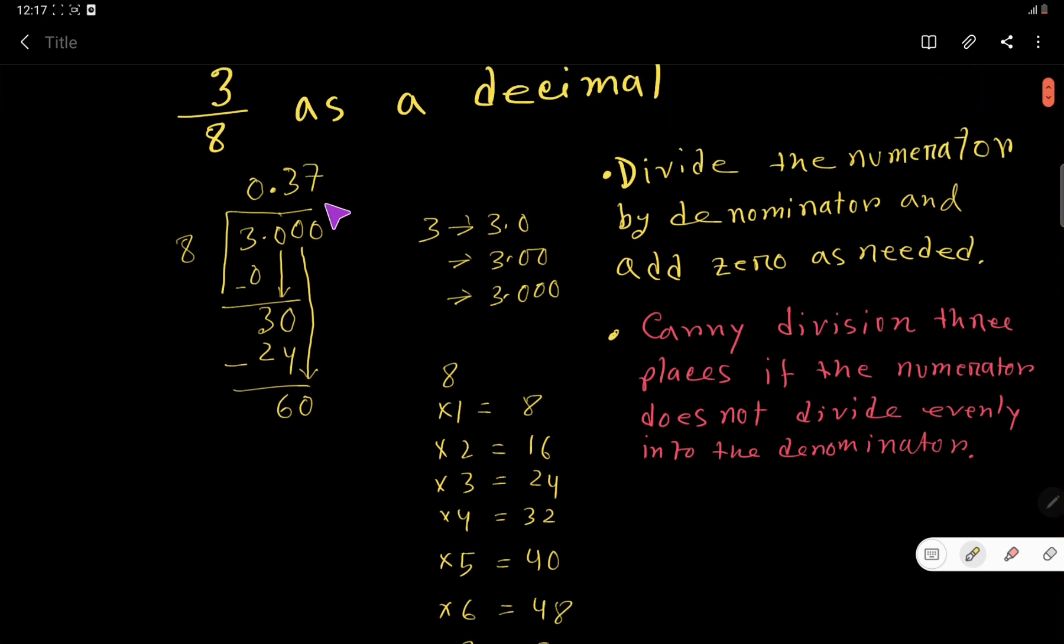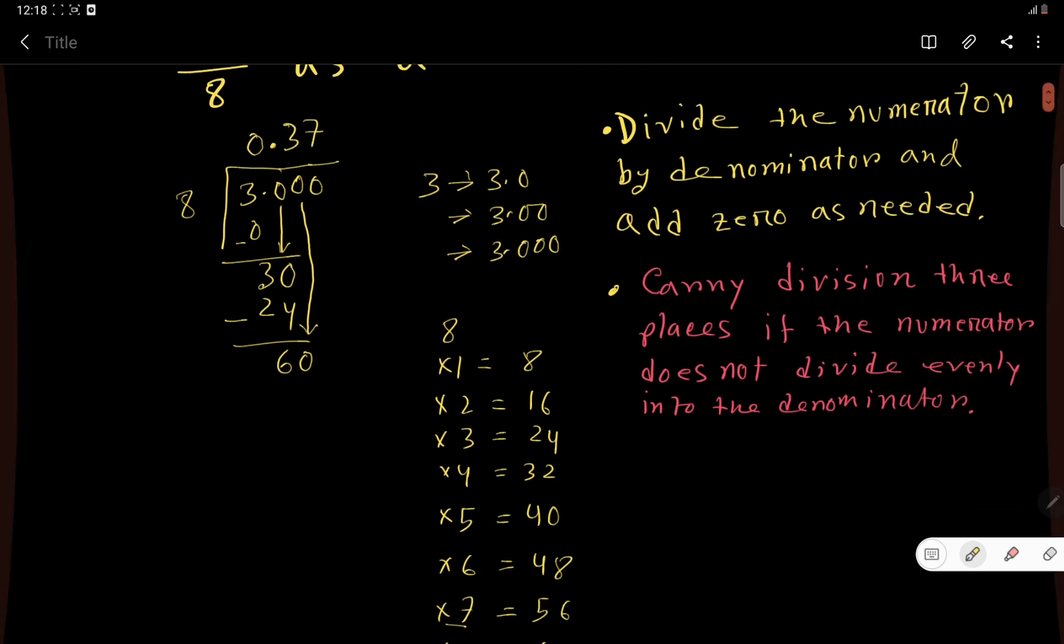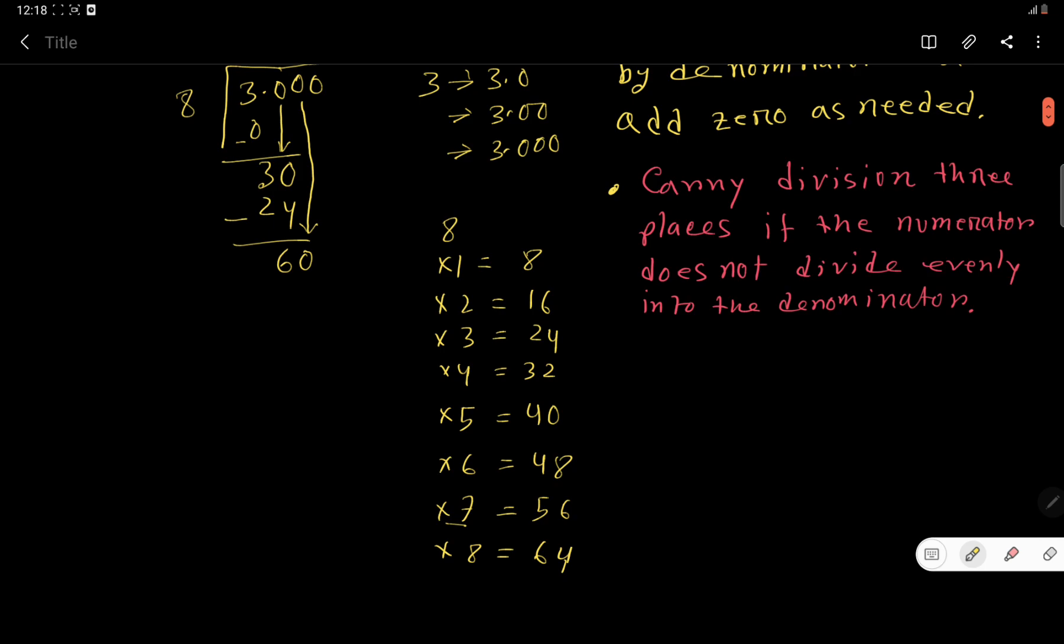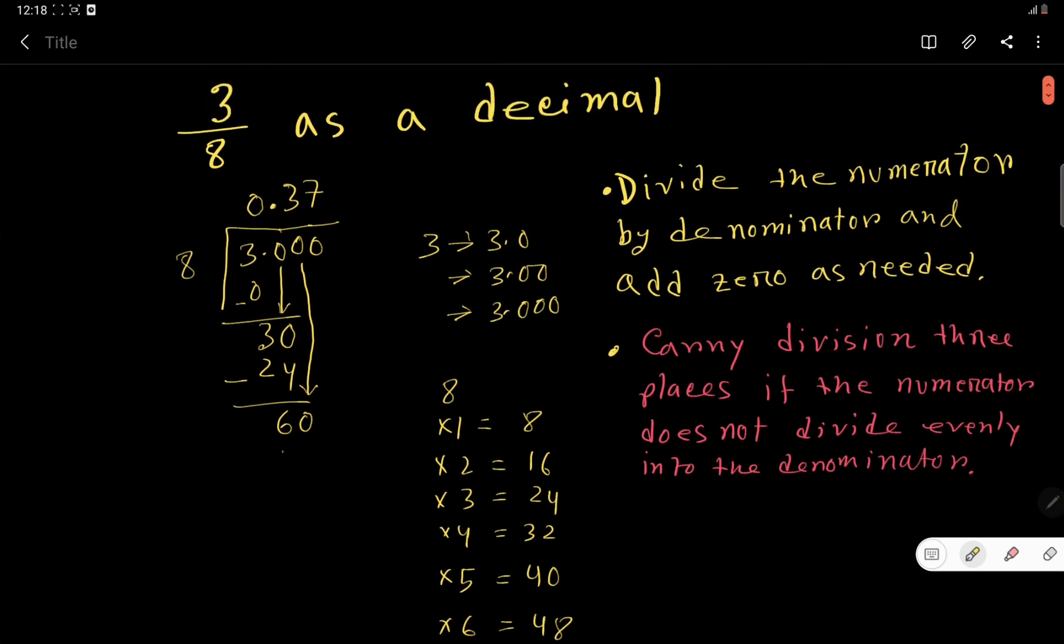We take 7. 8 times 7 equals 56, so we write 56 here. Subtract.